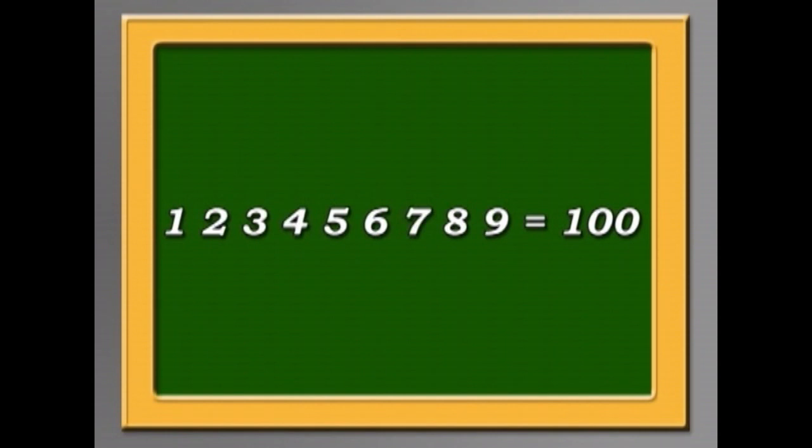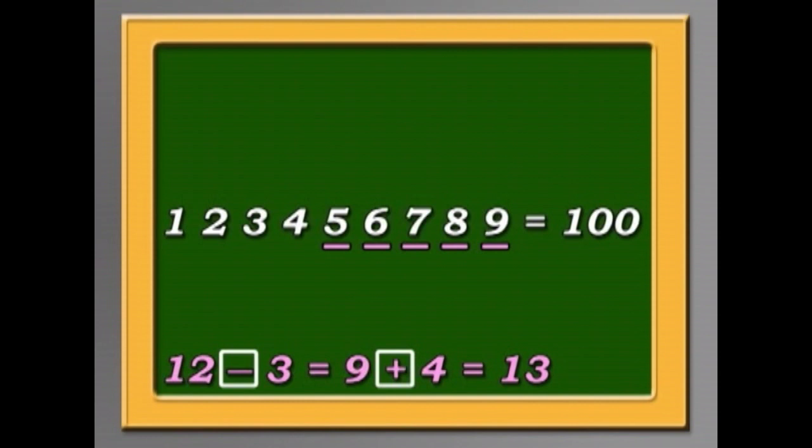But I'll show you what I mean. You could, for example, put 1 and 2 together, making 12. Minus 3 equals 9. Plus 4 equals 13. But you've already used 1 plus and 1 minus. And you've got 5, 6, 7, 8, 9 left.